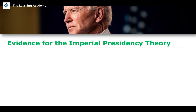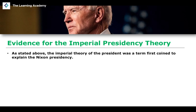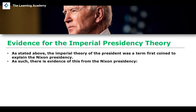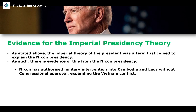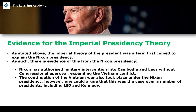Let's look at some evidence for the imperial presidency theory. The term was first coined to describe the Nixon presidency, so we have quite a bit of evidence that Nixon was arguably an imperial president. We can talk about the authorization of military intervention in Cambodia and Laos without congressional approval, in response to the Vietnam conflict. The continuation and expansion of the Vietnam War is also a good example of Nixon's imperial presidency.